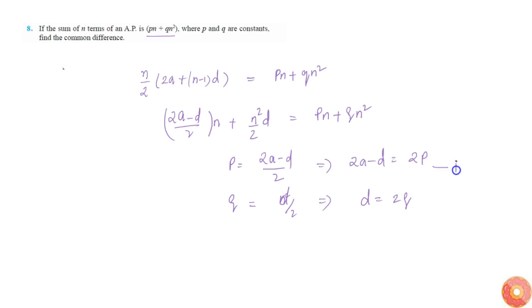So this is equation one and this is two. From 1 and 2 we get 2a is equal to 2p plus 2q, which is 2 into p plus q.